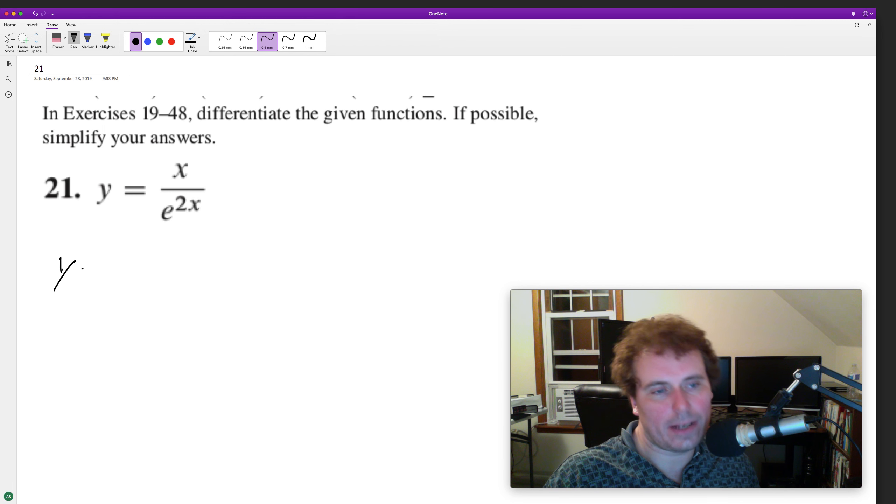The way to do that is to rewrite this as x times e raised to the negative 2x. You just rewrite the exponent, and now we can use the product rule.